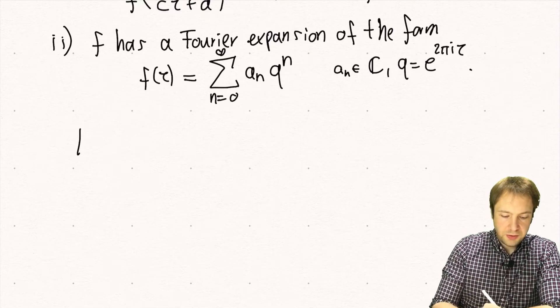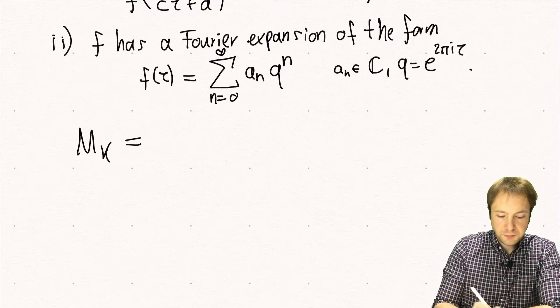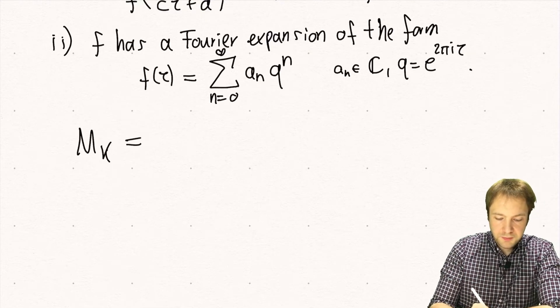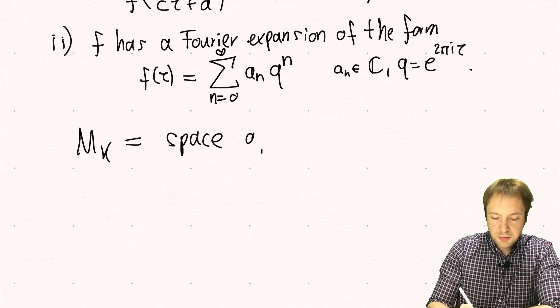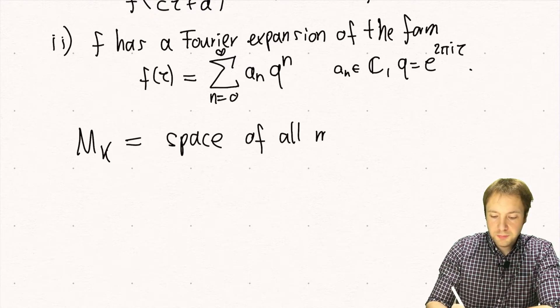We denote by M_k the C-vector space spanned by all modular forms of weight k.